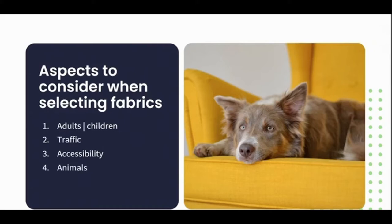Next, something we often take for granted — we need to look at animals. Are there any animals that will come into contact with that fabric? Do we need to accommodate their behaviour and fur? And lastly, we need to look at environmental elements such as sun, wind, and water. Is there water present near the proposed fabric location? Will there be direct sunlight on the couch or furniture piece? All of these items will impact the fabric you choose.